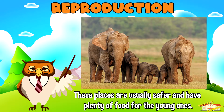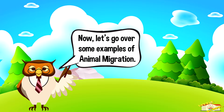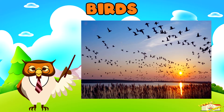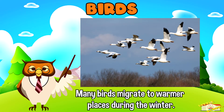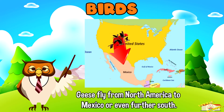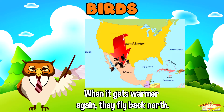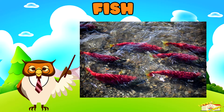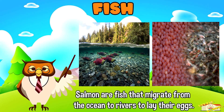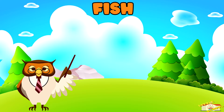Now let's go over some examples of animal migration. Birds: many birds migrate to warmer places during the winter. For example, geese fly from North America to Mexico, or even further south. When it gets warmer again, they fly back north.